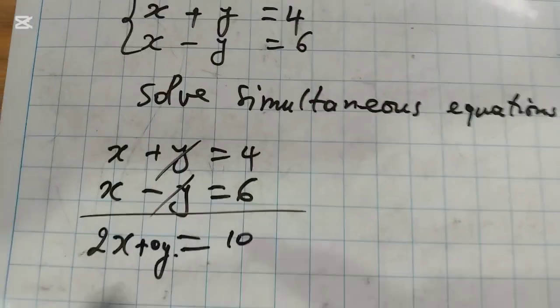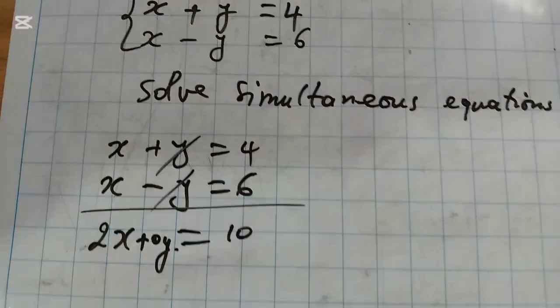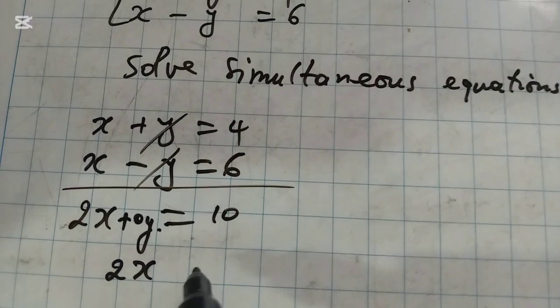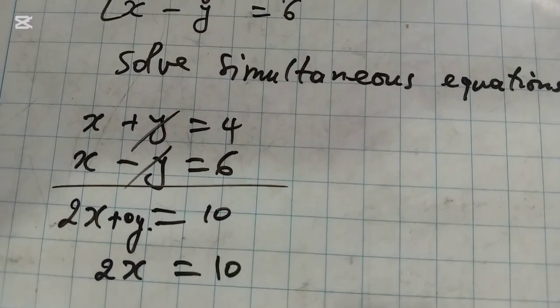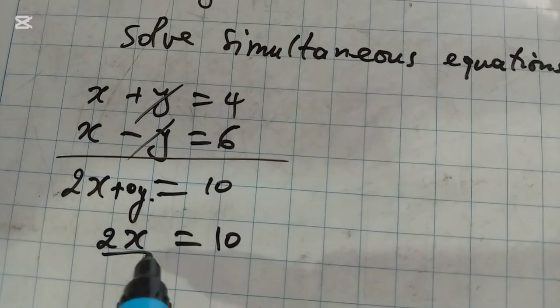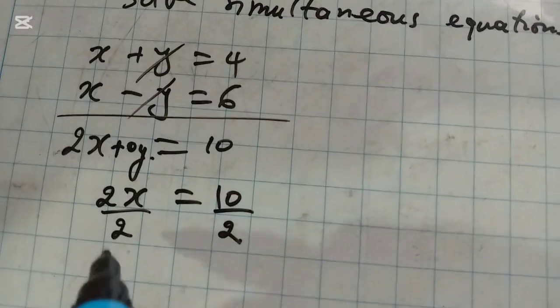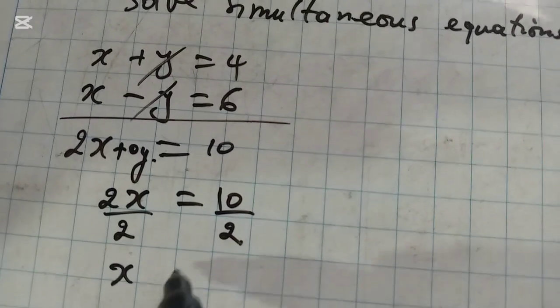Here you have 2X equals 10. Now when we divide by 2 on both sides, we have X equals 5.